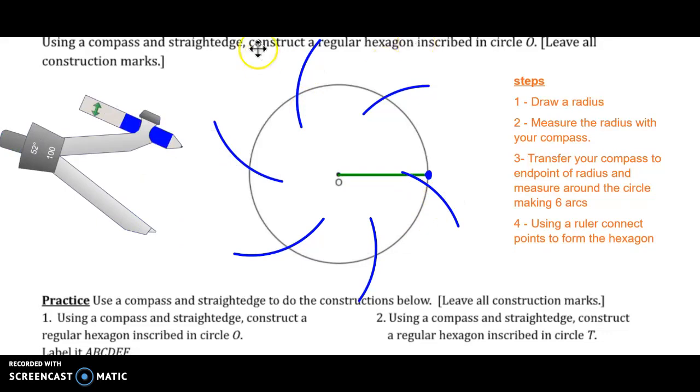If it doesn't, mine's going to be a little bit off, but that's okay. Where all those arcs intersect the circle, we can put points. Notice we have six vertices.